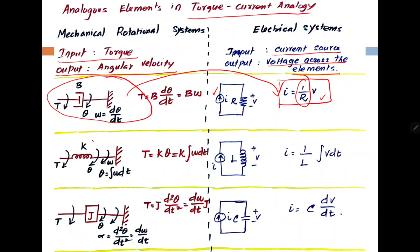In the torque-current analogy, the spring is equivalent to inductance, and the equation related to this electrical circuit is I equals 1 by L times the integration of V with respect to dt. At the same time, the mass element is equivalent to a capacitor, and the corresponding equation is I equals C times dV by dt, the rate of change of voltage.